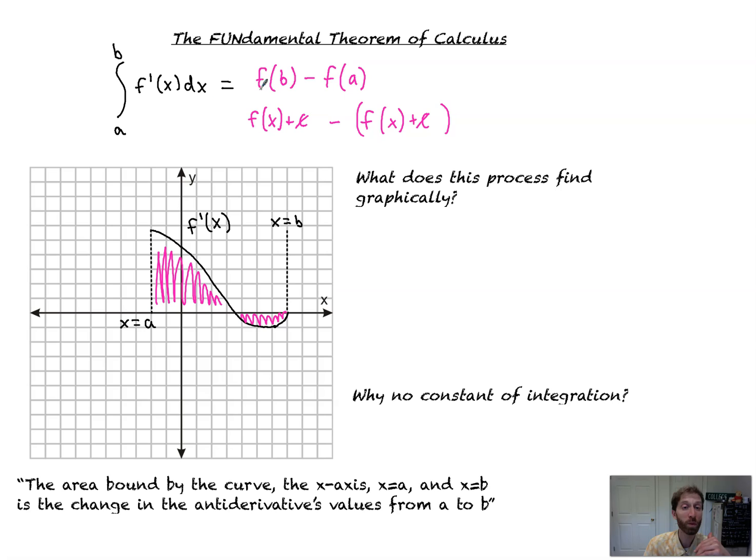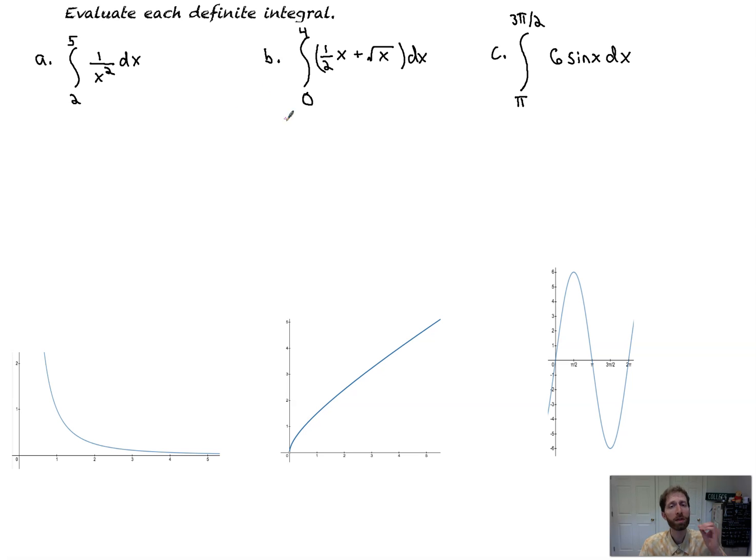For right now, just know that the integral of any function from a to b is equal to the antiderivative of that function. You just plug in the upper bound and subtract out plugging in the lower bound. It's simple. Oh, it's so simple. We're going to now hit that up with three consecutive problems.